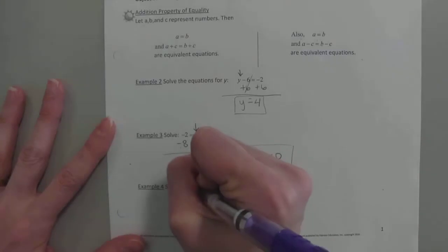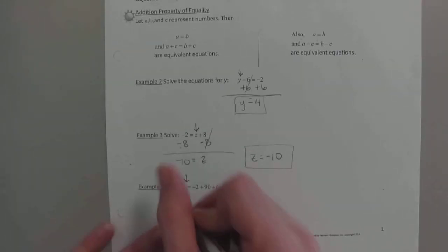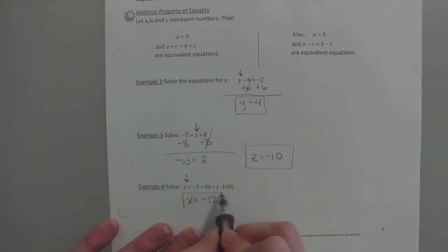Here, this is kind of a weird one. Notice x is already isolated. What's the only thing we have to do to this problem to solve for x? Just do all that math, right? We don't have to do any opposite stuff. As long as everything's on the same side and you're not moving from one side to the other, you do the math that's there. And we have a calculator. So just throw negative 2 plus 90 plus negative 100 in your calculator and you'll know what x is. What do you guys get? Negative 12.